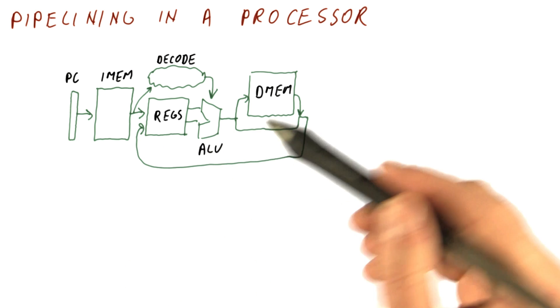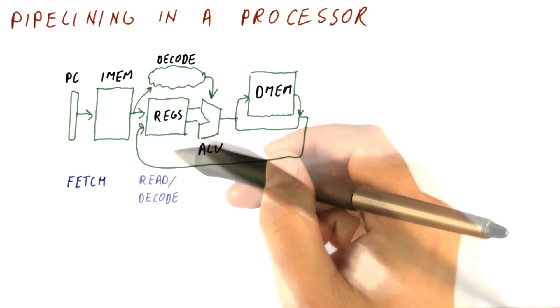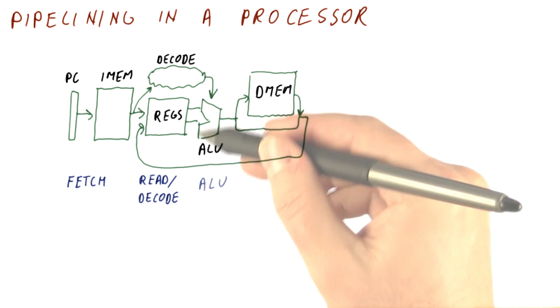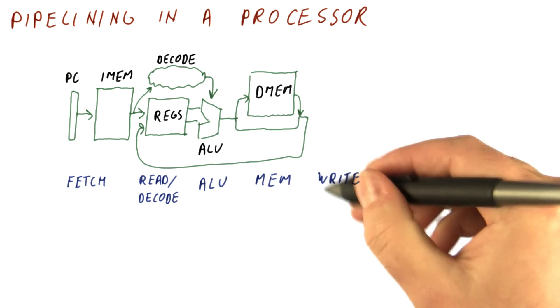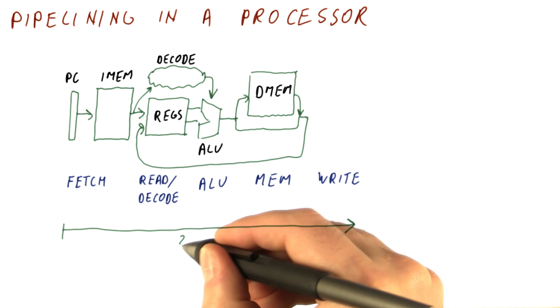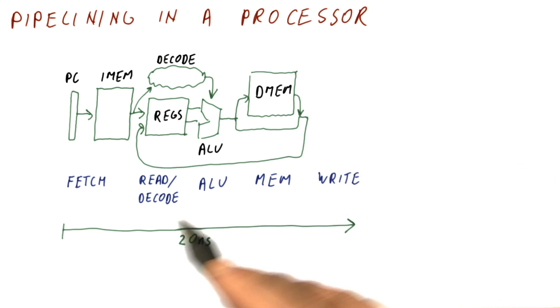You can see that the instruction goes through these five phases: we fetch the instruction, we read registers and decode, we use the ALU, we access the memory, and finally we write the registers. The time to do this might be something like 20 nanoseconds, so we can do one instruction every 20 nanoseconds.